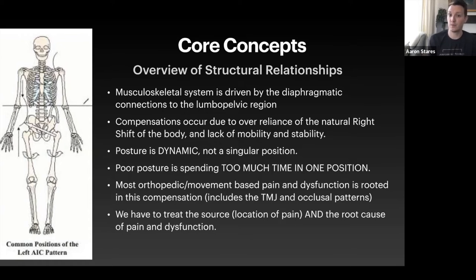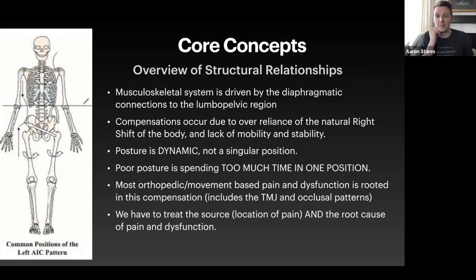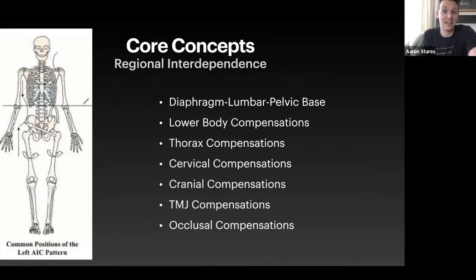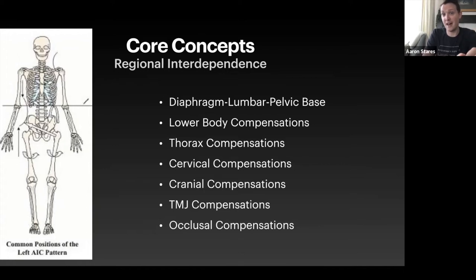Most orthopedic, movement-based pain and dysfunction — including TMJ, TMD issues, and occlusal patterning — is rooted in this compensation. We need to treat the source. When someone comes in with TMJ pain, we've got techniques to decrease pain, but that pain will come back if we don't treat the underlying root cause, which the vast majority of the time is a lack of stability somewhere in the system. Regional interdependence means one area of the body can affect another — the core or feet can affect the jaw.